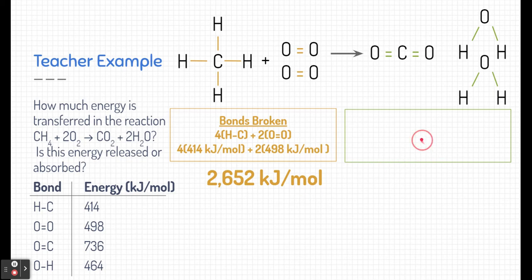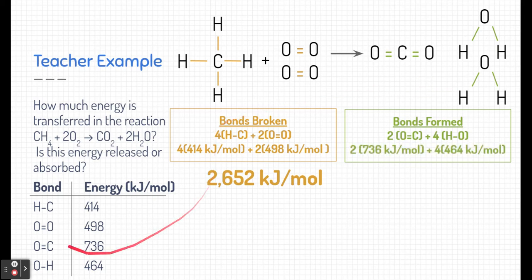Now let's take a look at the products. All of the bonds formed. Remember these release energy. I see that there are two sets of double bonds between oxygen and carbon and there are four sets of single bonds between hydrogen and oxygen. If I use my bond energy chart and add all those bonds together, I can determine the total amount of energy that's released by the products.